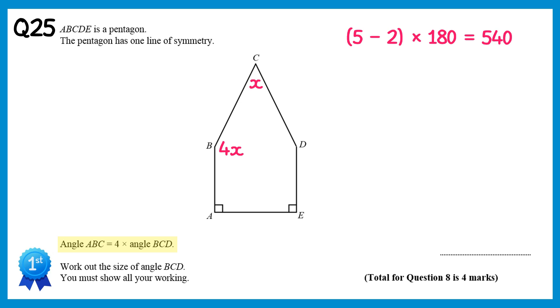We're also told in the question that this pentagon has one line of symmetry, so that would be down the middle here. This would mean that angle CDE is also 4x. Now that we have all of the angles labelled, we can add them all up. So if we start with x, add 4x, add another 4x, add 90, and add another 90. All of this must add up to 540 degrees. We can simplify this a little bit. If we collect the x's, we get 9x, and then the numbers, we get plus 180, and this equals 540.